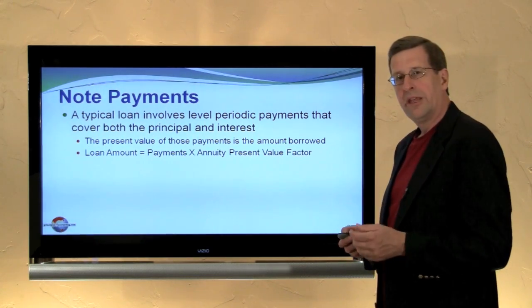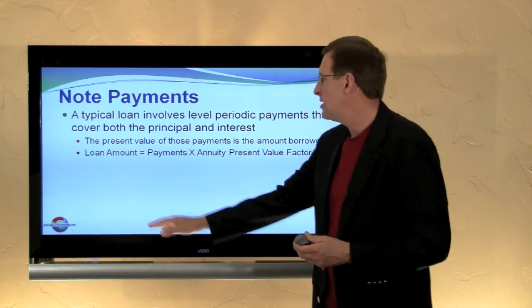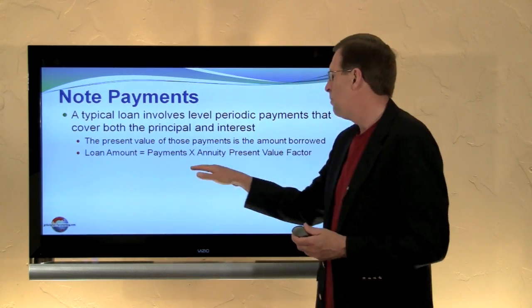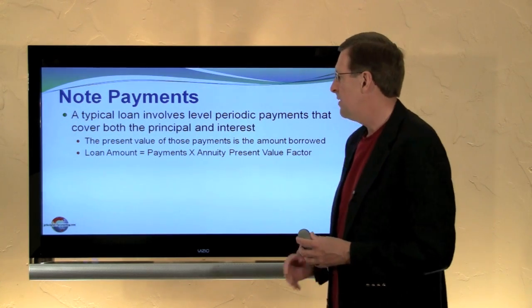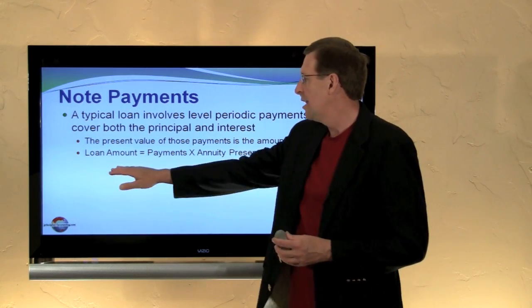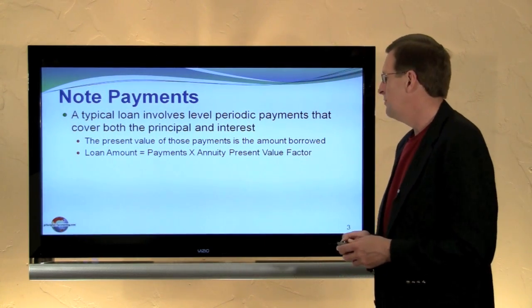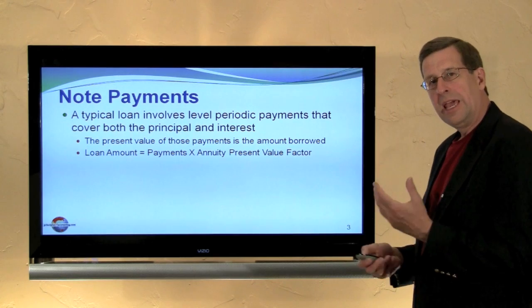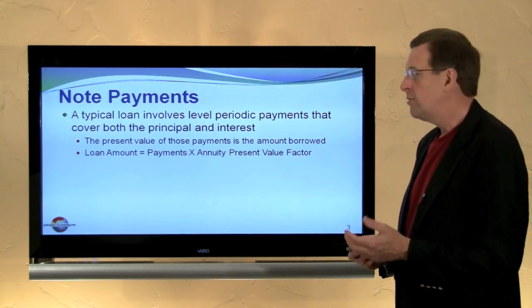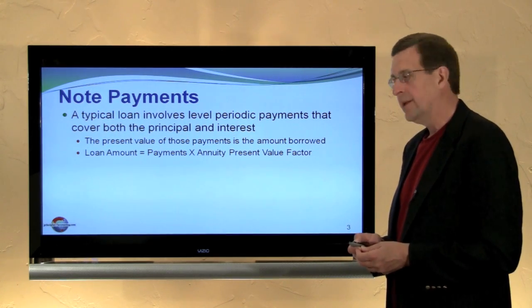We can look at a formula — rather than saying the present value equals payments times an annuity present value factor, we can say that the loan amount equals the payments times the annuity present value factor. We are now beginning to understand how we can calculate loan payments.